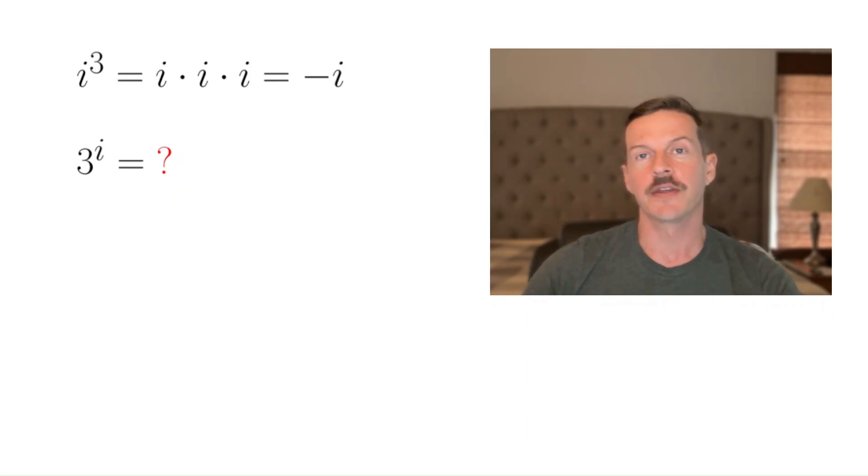If we wanted to compute i to the third power, that's pretty simple. In fact, that just means i times i times i, or multiply i by itself a total of three times. And that's pretty simple, right? i times i would be negative one, and multiply it by i, we get negative i.